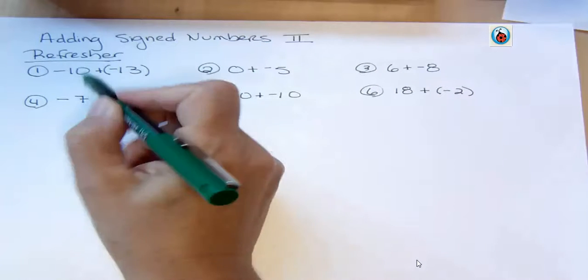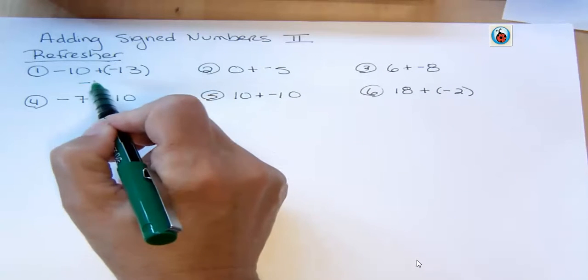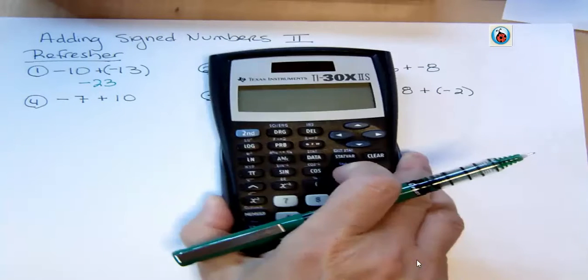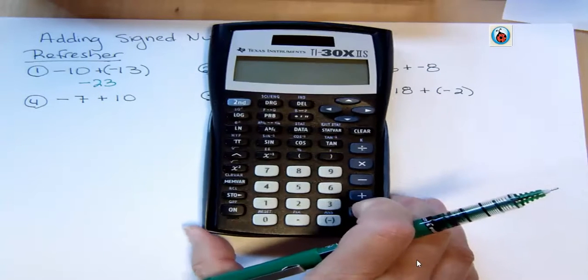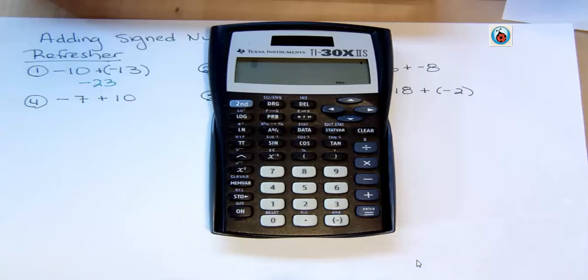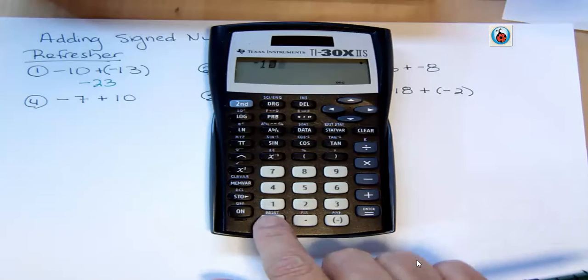So negative 10 and negative 13 is going to be a bunch of negatives, and it turns out to be negative 23. I wanted to show you on the calculator, and I'm using a TI calculator. If I wanted to put this into the calculator, I can't put that in using the minus sign because that's not what that means. So I want to put in a negative from down here at the bottom, and then 10, and then plus.